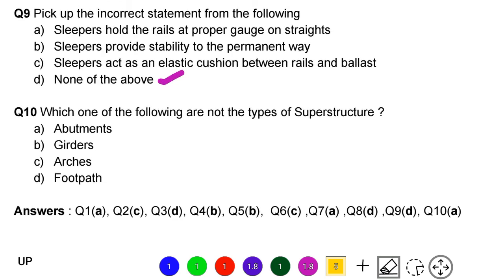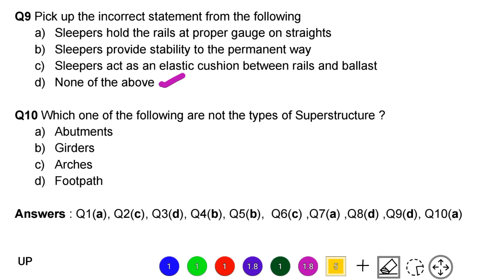Next question: which of the following are not the types of superstructure. Option A: abutments. Option B: girders. Option C: arches. Option D: footpaths. The correct answer is option A, abutments.